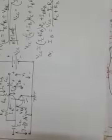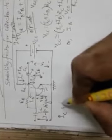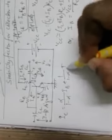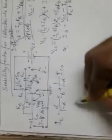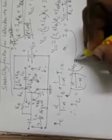Since VBE is very small we can ignore it, so we write VCC approximately equal to (IC plus IB) times RC plus IB times RB. From here we calculate IB: IB equals (VCC minus IC times RC) divided by (RC plus RB). Call this equation number three.